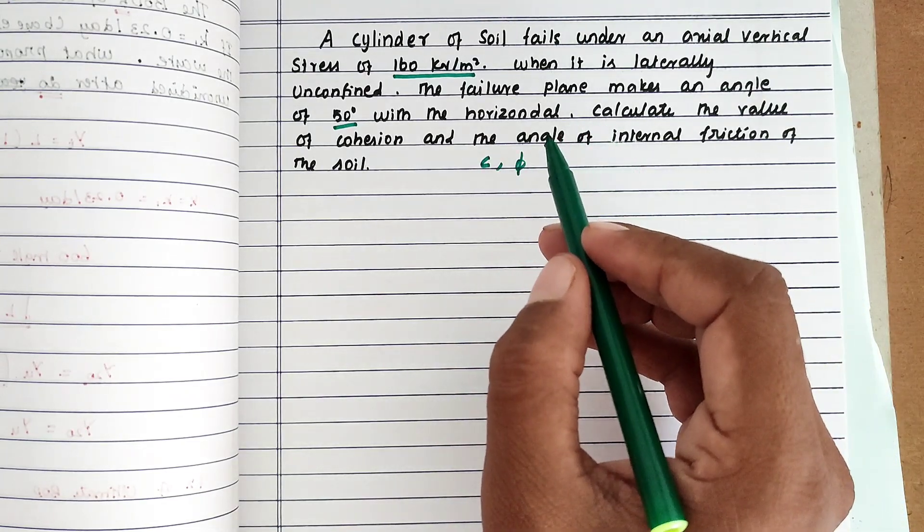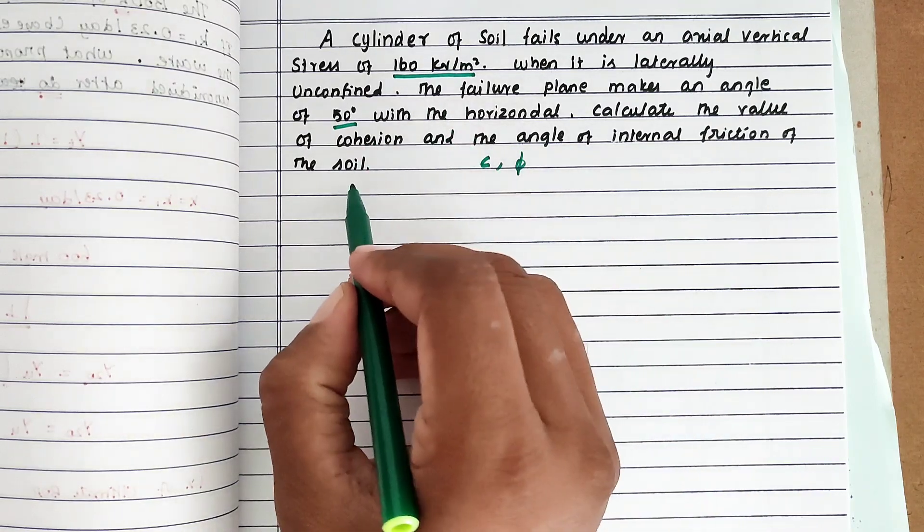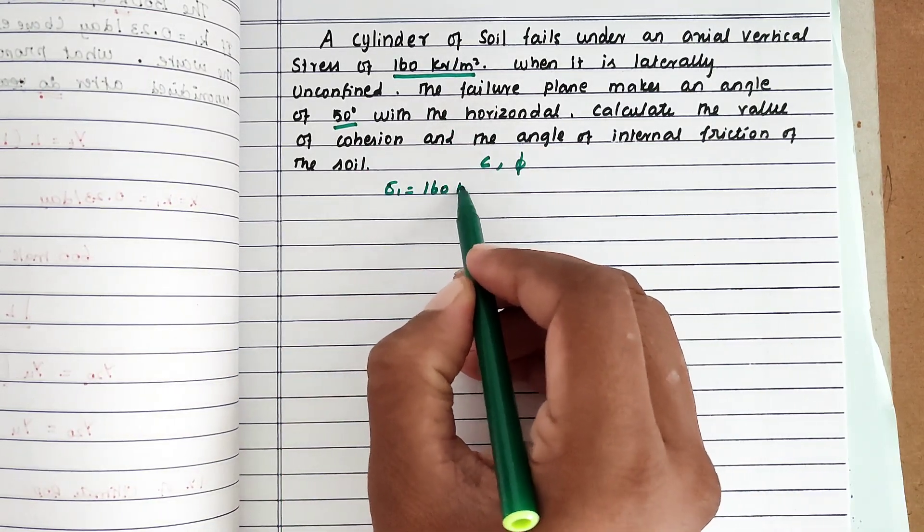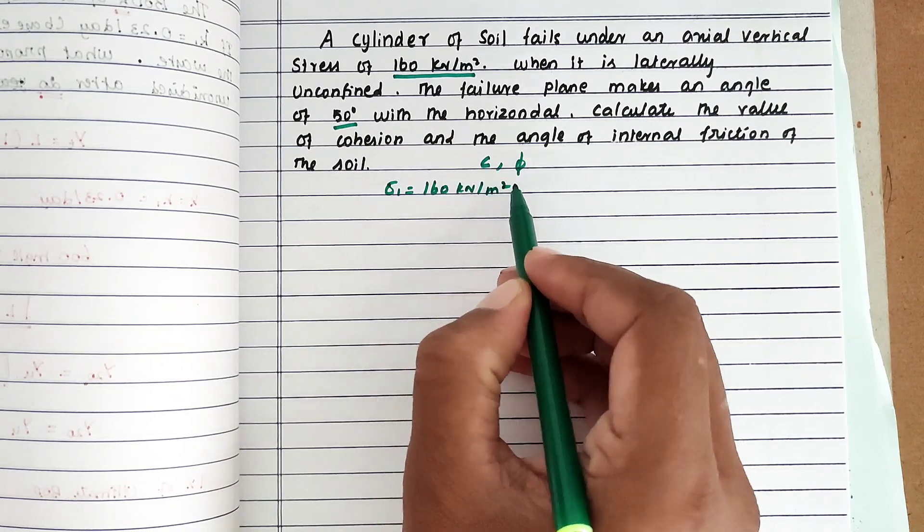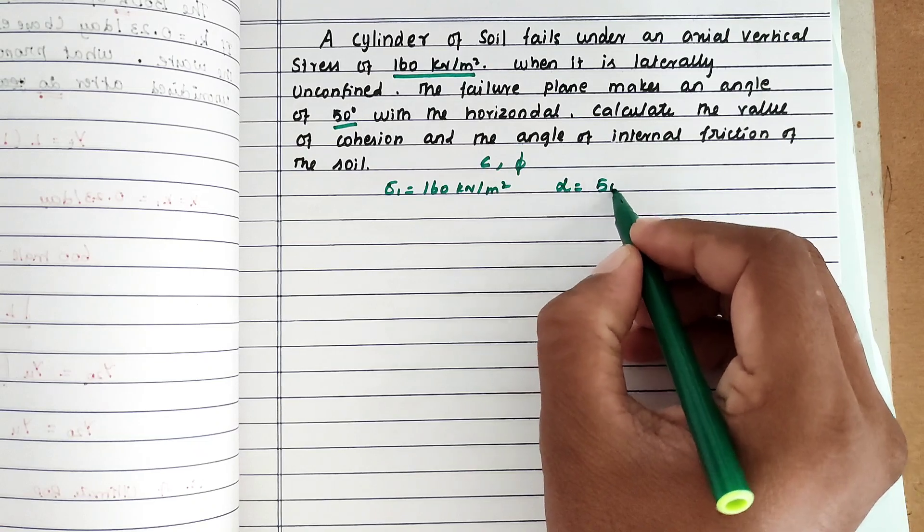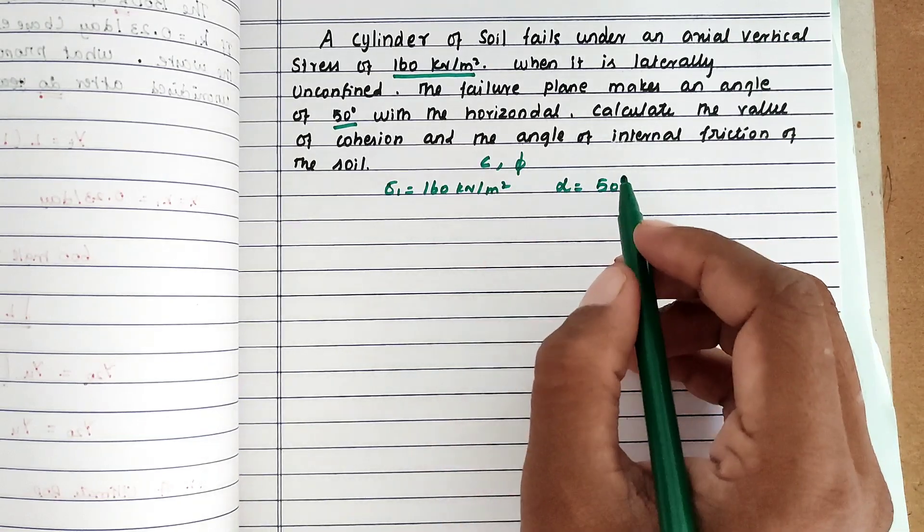The given values are: stress sigma 1 equals 160 kN per meter square, and the angle alpha equals 50 degrees. These are all the given values.